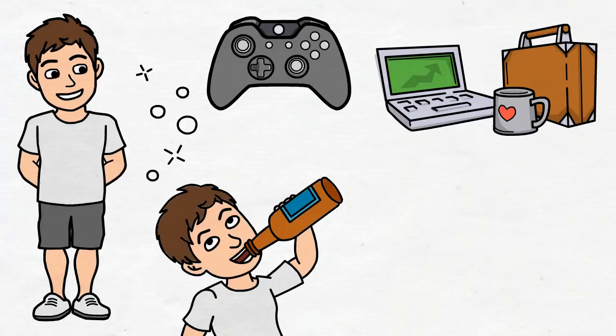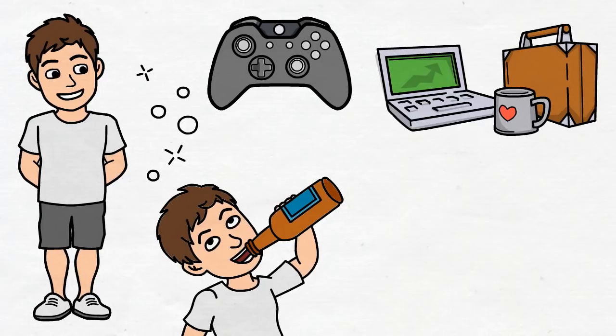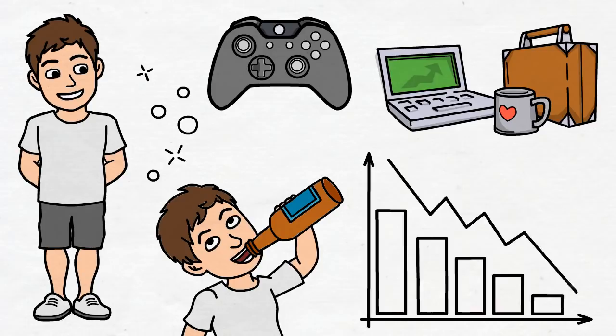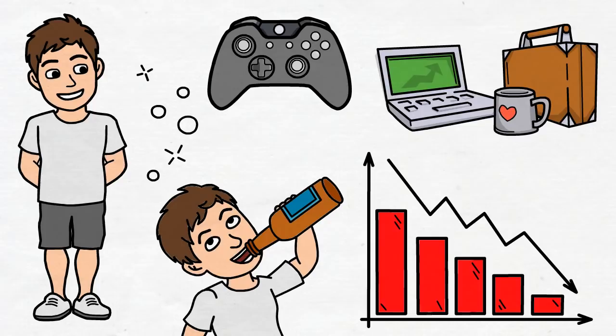He knows there are negative side effects that come along with his habits. But why does he keep mindlessly playing video games and partying on the weekends, when those activities are not aligned with his goals and are ruining his results? Logically, he should be avoiding those bad habits, but for some reason he keeps giving in to his cravings.